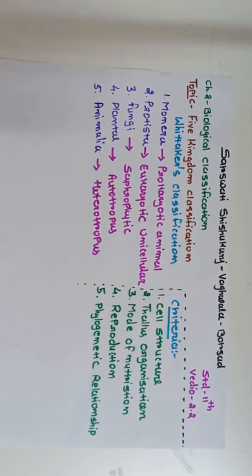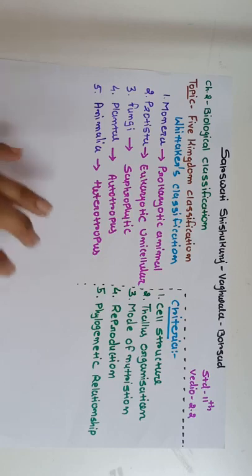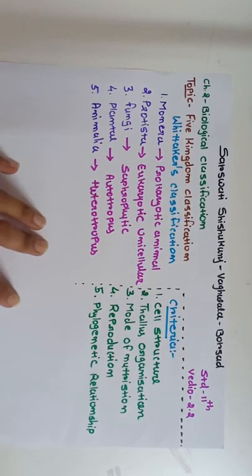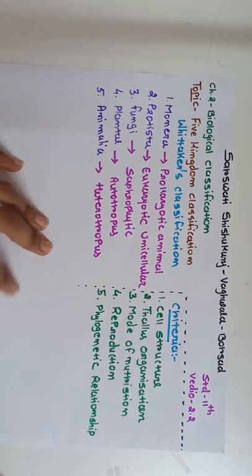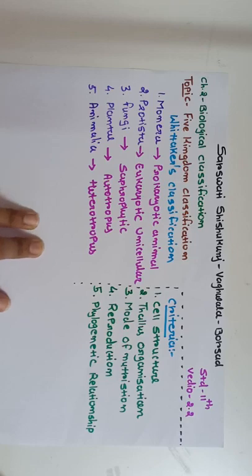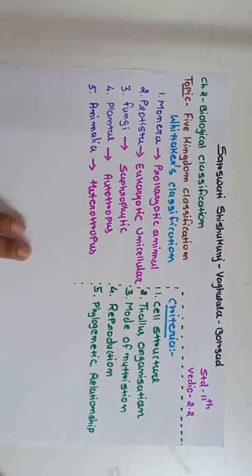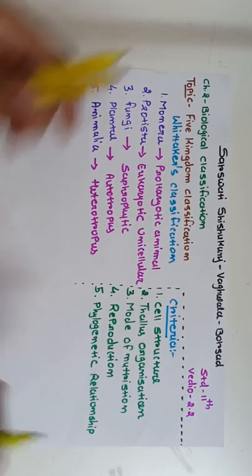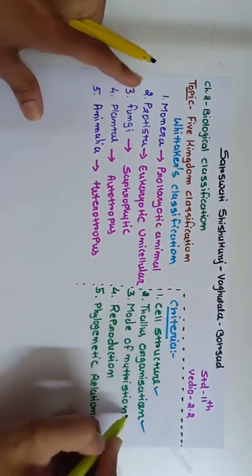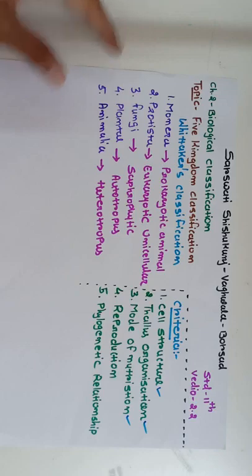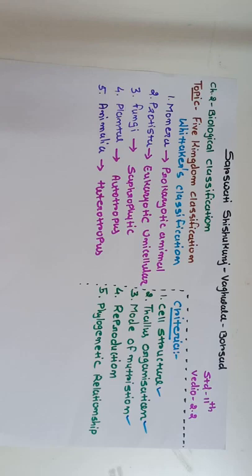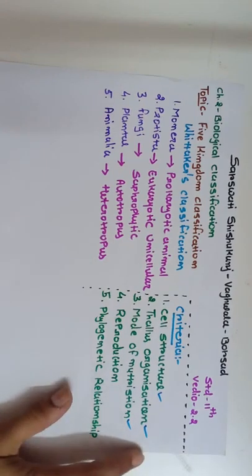This classification has an evolutionary base, so phylogenetic relationship is also one type of criteria included in Whittaker's classification. To summarize: first is cell structure, second is thallus organization, third is mode of nutrition, fourth is reproduction, and fifth is phylogenetic relationship. The first three — cell structure, thallus organization, and mode of nutrition — are the main criteria of the five kingdom classification.